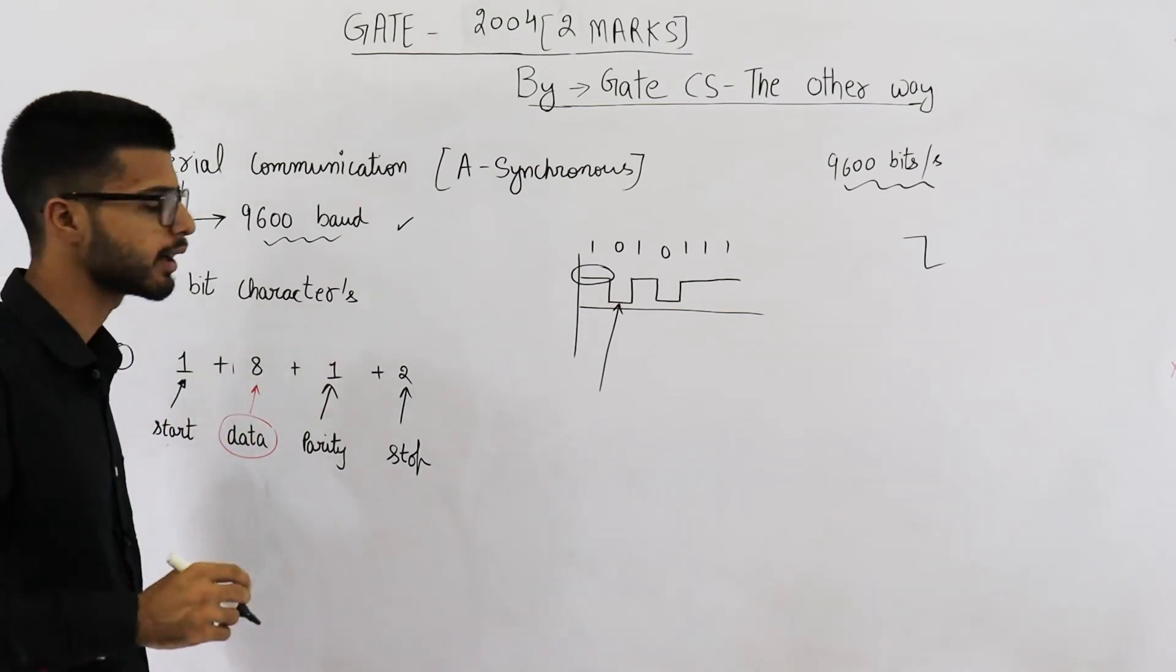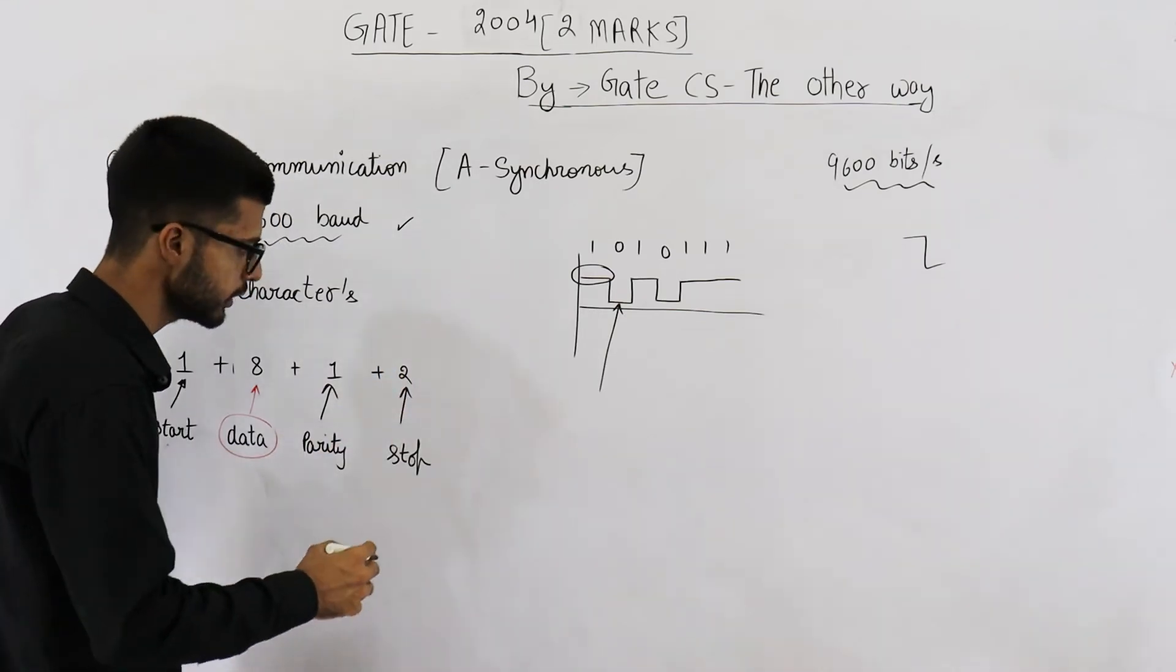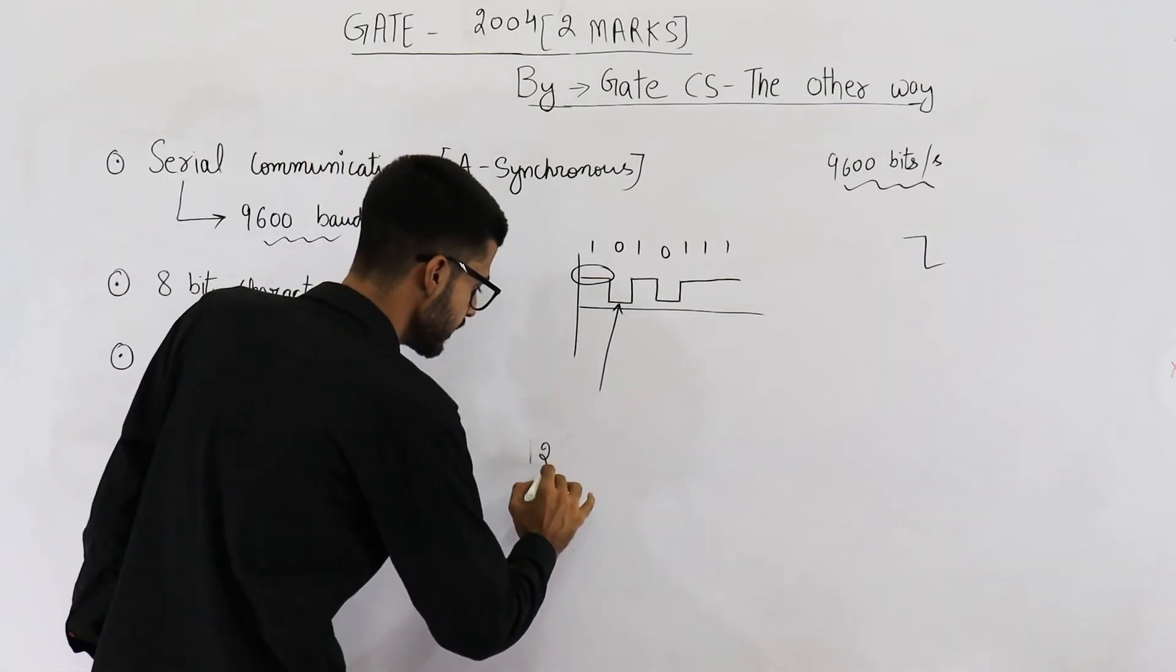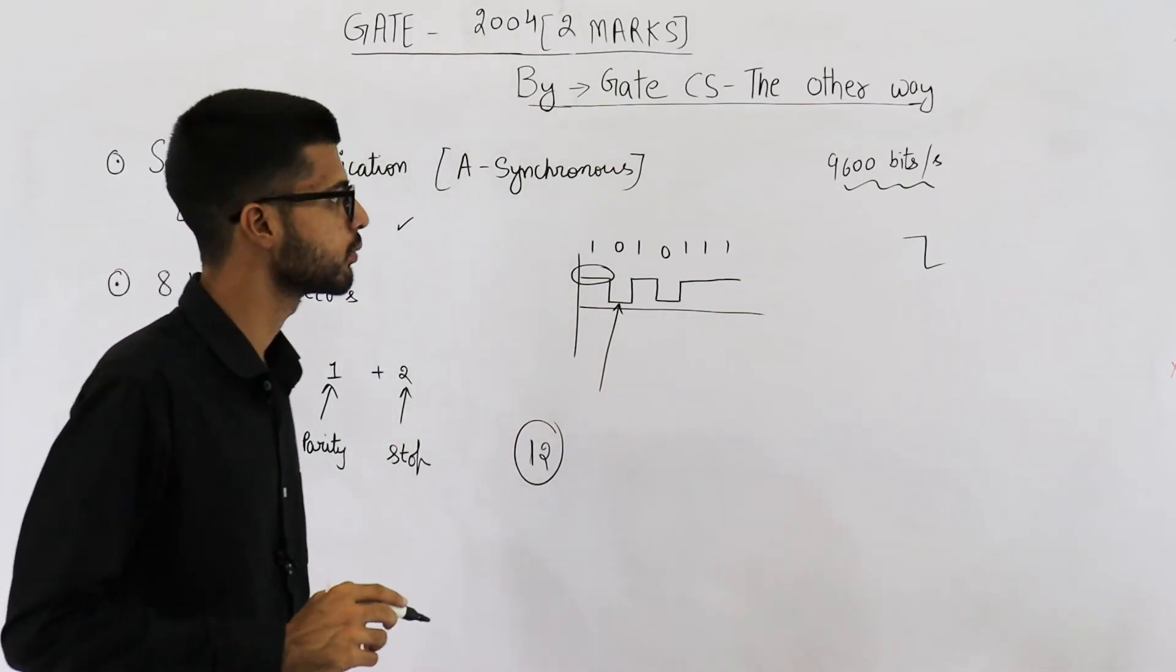That means one character is accompanied by four redundant bits. So, each character needs 12 bits to get transferred. One character needs 12 bits.